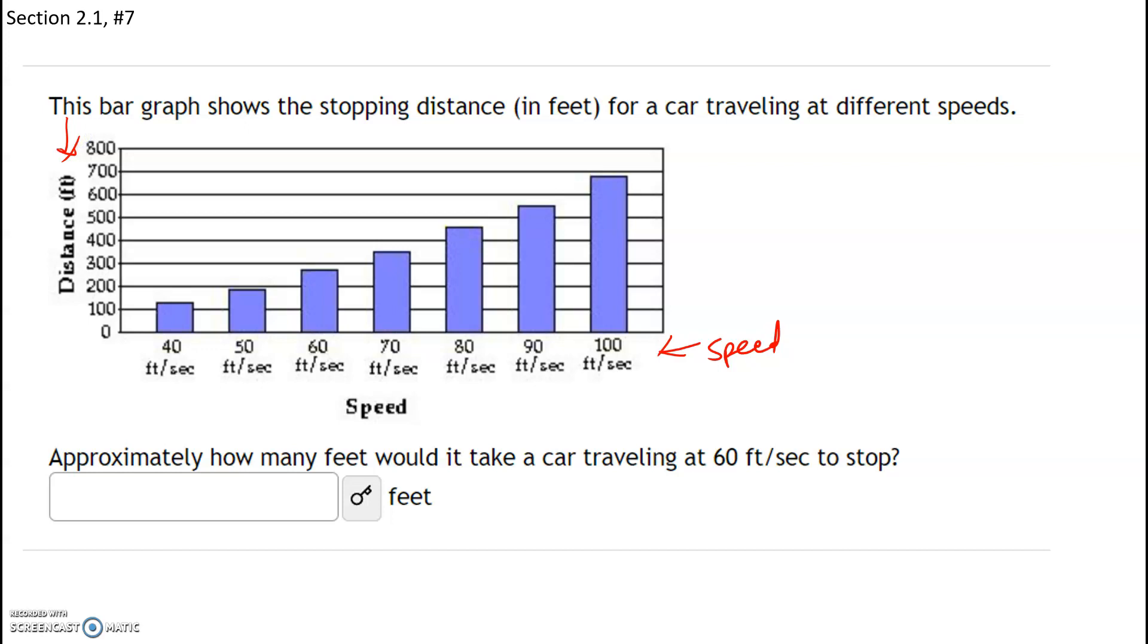We want to take a look at the car that's traveling at 60 feet per second. That's going to be this car right there. Now how long does it take to stop? Here we have to do some approximation. If I go up here, I want to figure out which value this is on the y-axis, because the y-axis is the distance required to stop.